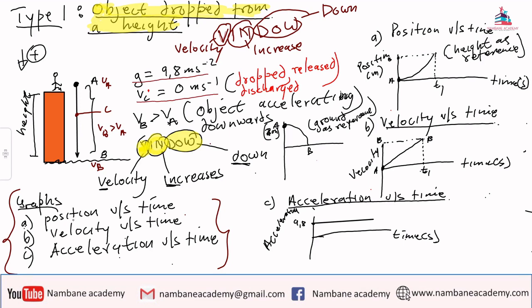So with position versus time, we said when we look at it in terms of the height of the building as the reference, it will start at point A which will be now zero, move to point B for a certain height. But when we are told that the ground is the reference, it will start now at point A because point A will be at the top of the ground, and then it will start now moving downwards in this particular fashion at B.